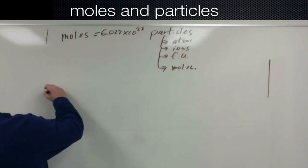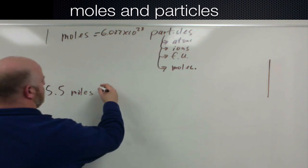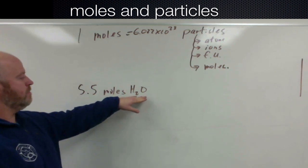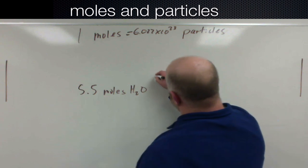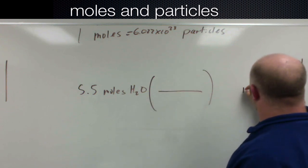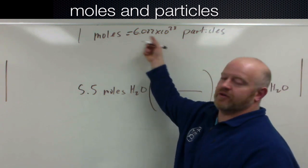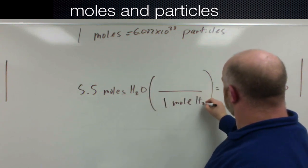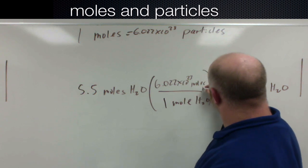If I take, let's say I have 5.5 moles of water. So I have 5.5 moles of water. Now I want to know how many molecules, because it's a covalent compound, how many molecules of water do I have. So I'm going to set up a pretty simple dimensional analysis and what I want to do is convert moles of water into molecules of water. Well here's our relationship for every type of particle. So if moles is here, moles goes down.